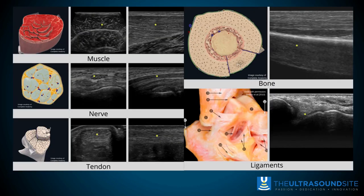To make sense of anisotropy, we also need to consider how reflective the different structures within the musculoskeletal system are. Tendons, for example, are very reflective and therefore very sensitive to the angle of the probe relative to the target structure. Muscle, on the other hand, is much less reflective, so the angle is far less sensitive to small deviations between the probe and the target structure.